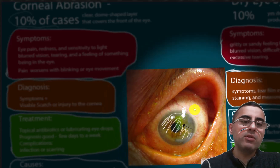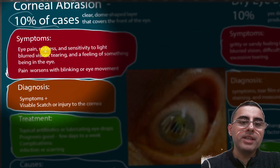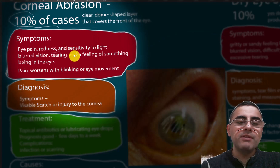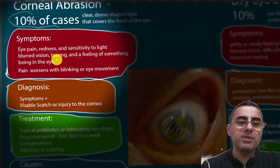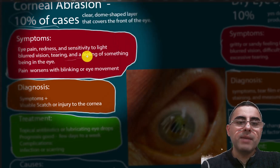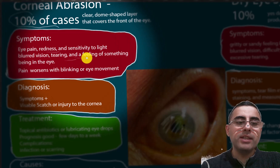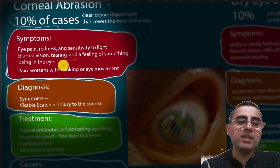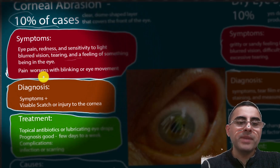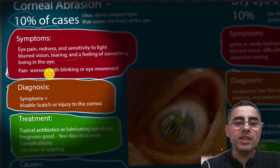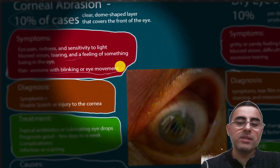Symptoms of corneal abrasion include eye pain, redness, sensitivity to light, blurred vision, tearing, and a feeling of a foreign body in the eye. Pain worsens with blinking or eye movements.